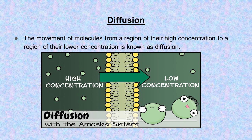Some substances such as carbon dioxide, oxygen, etc., can move across the plasma membrane through a process called diffusion. These substances are very small in size, so they diffuse radially through the phospholipid layer of the plasma membrane.